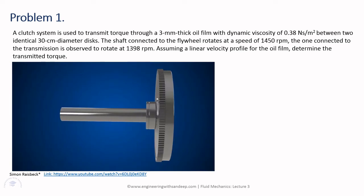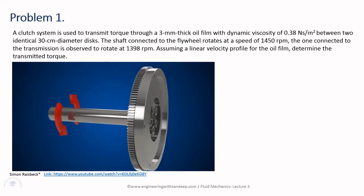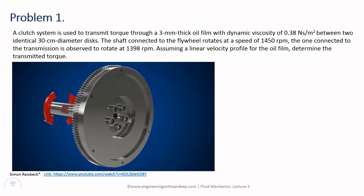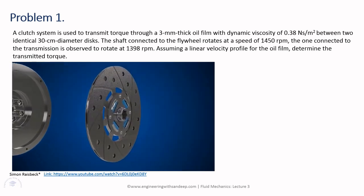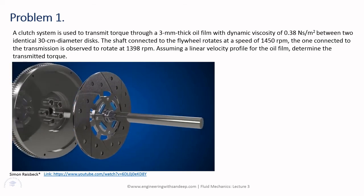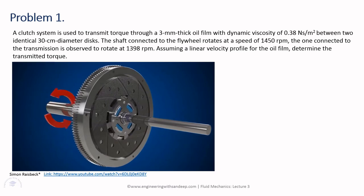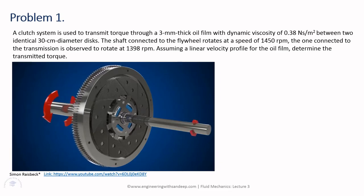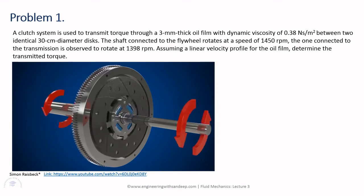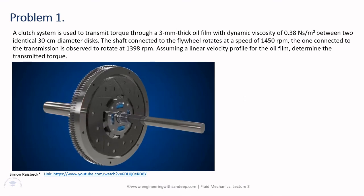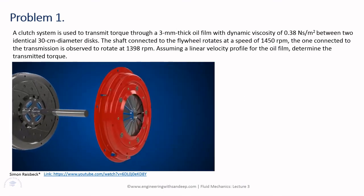Before solving, let's have a quick overview of the clutch system. A clutch is used to engage and disengage power between two shafts — the driving shaft and the driven shaft. The driving shaft is connected to the flywheel or engine side, and the driven shaft goes toward the transmission and ultimately to the wheels. There is a separate mechanism to engage and disengage the clutch plates.